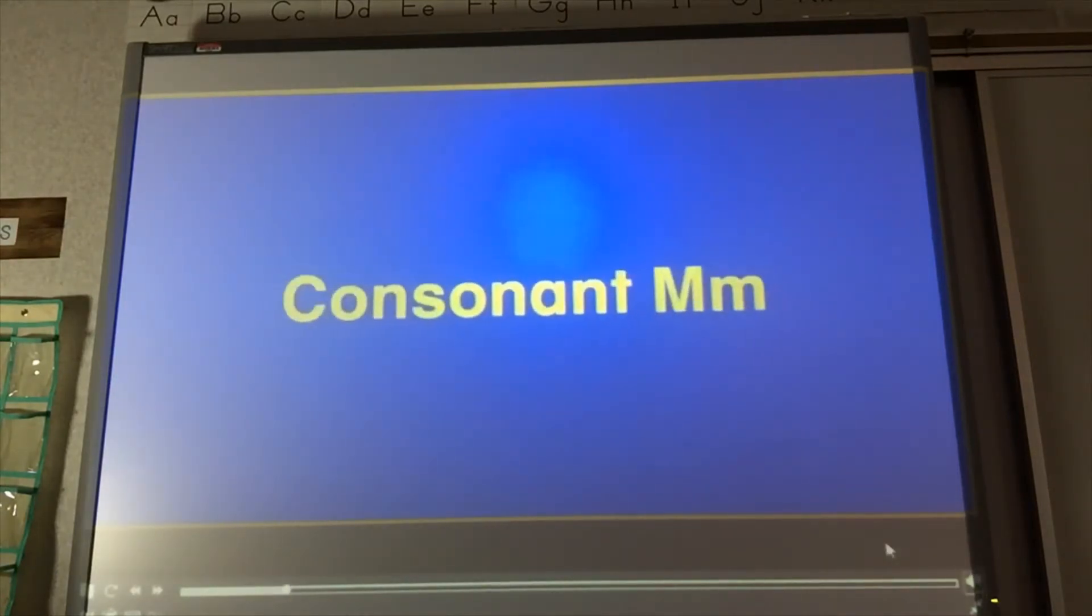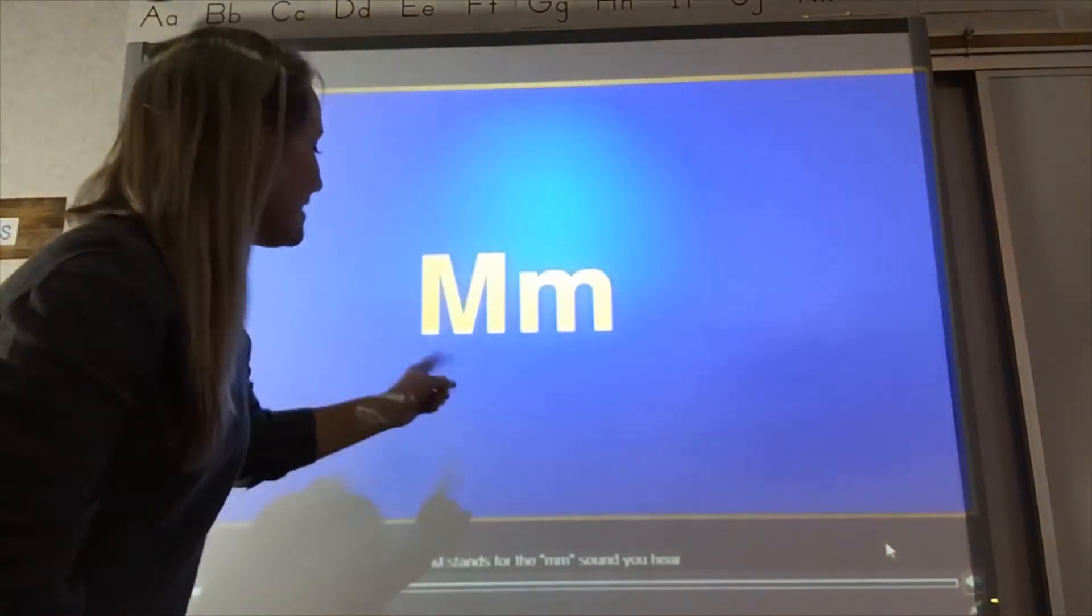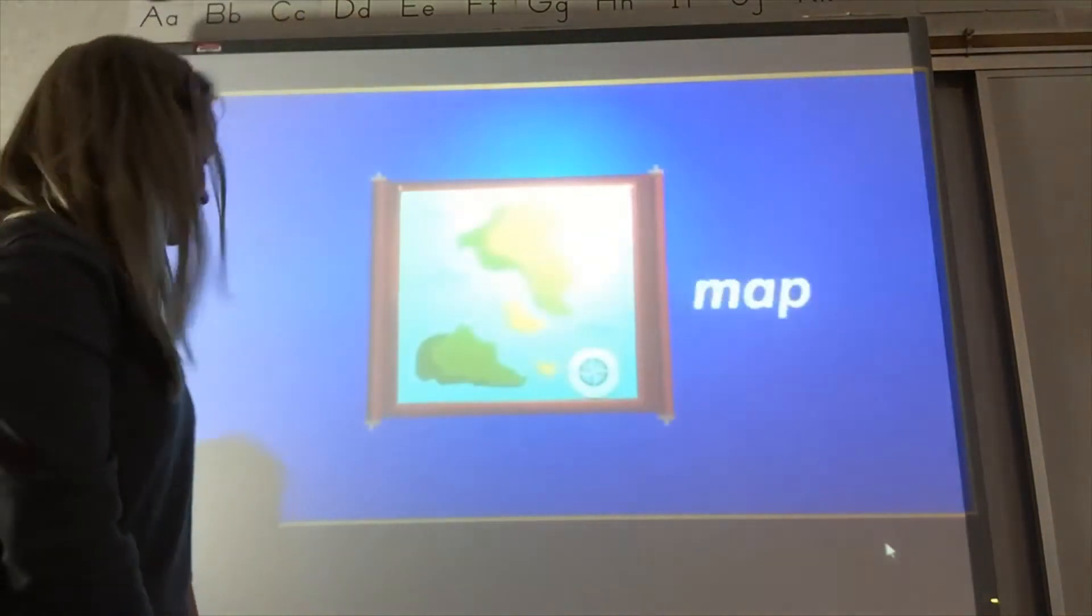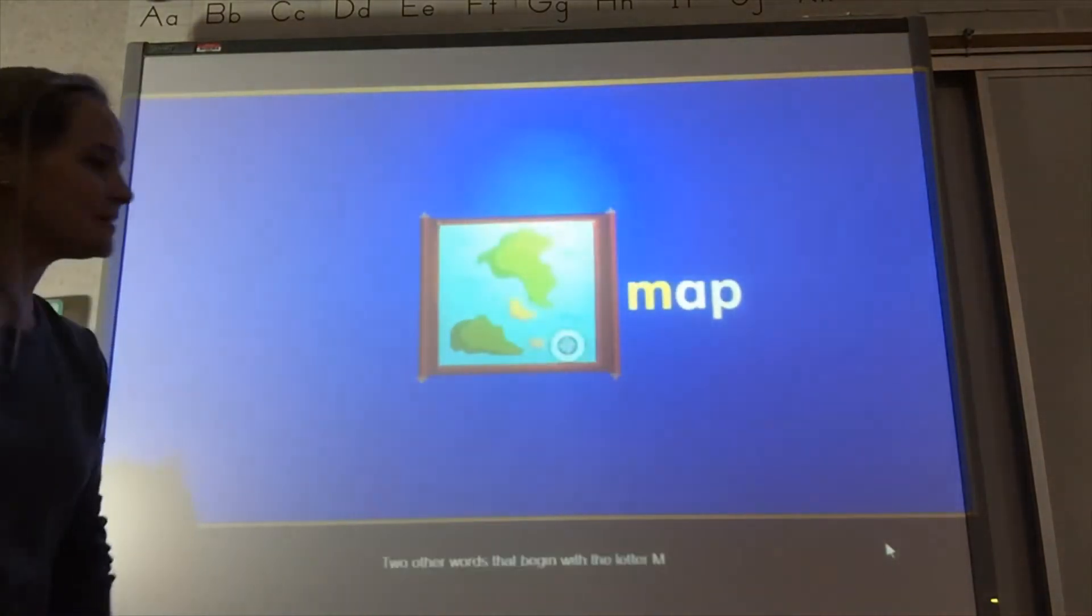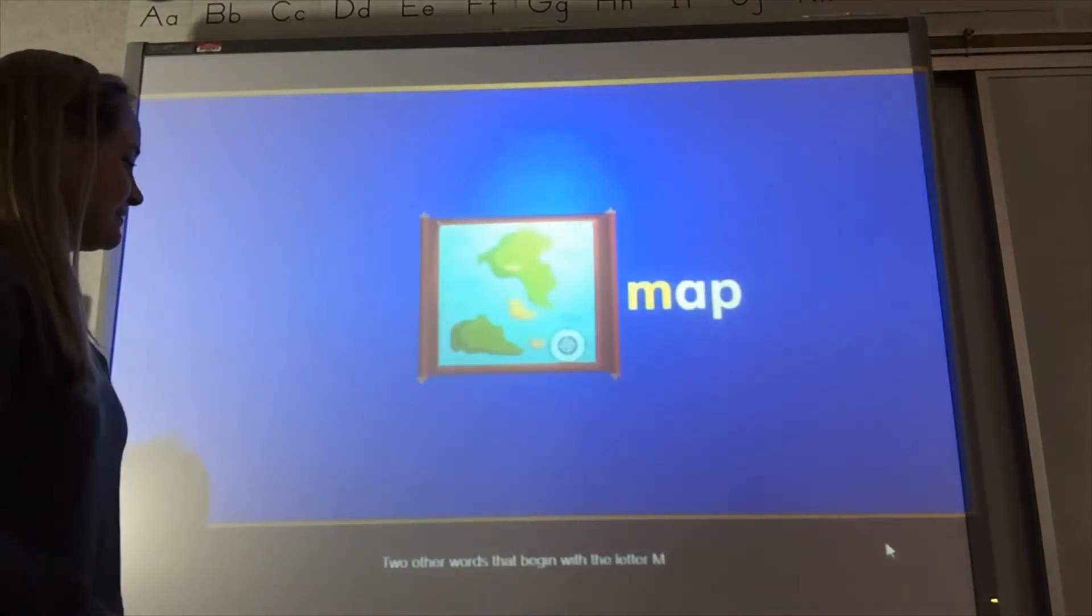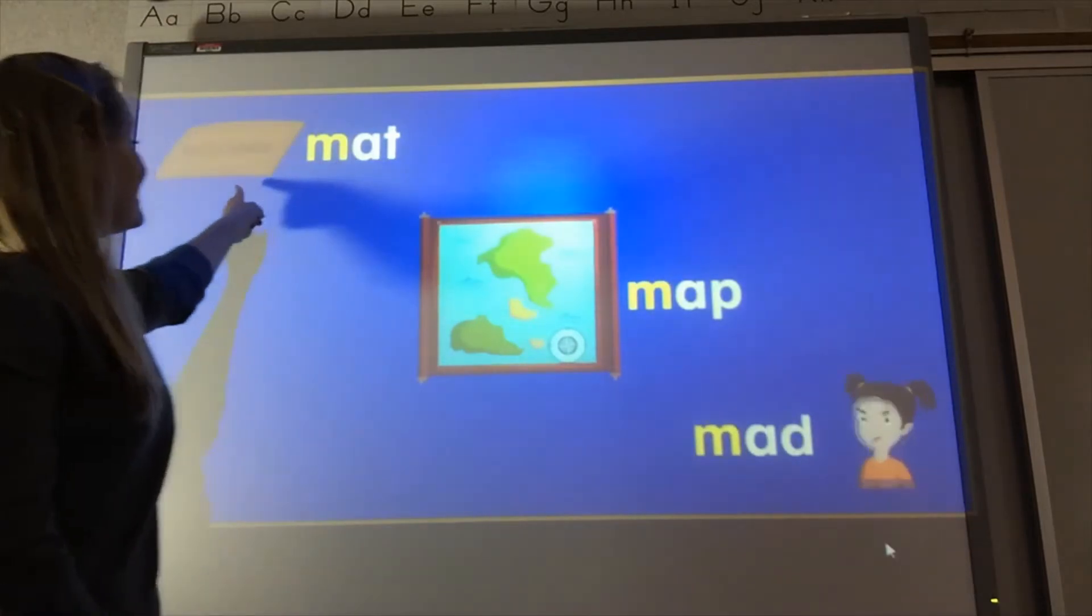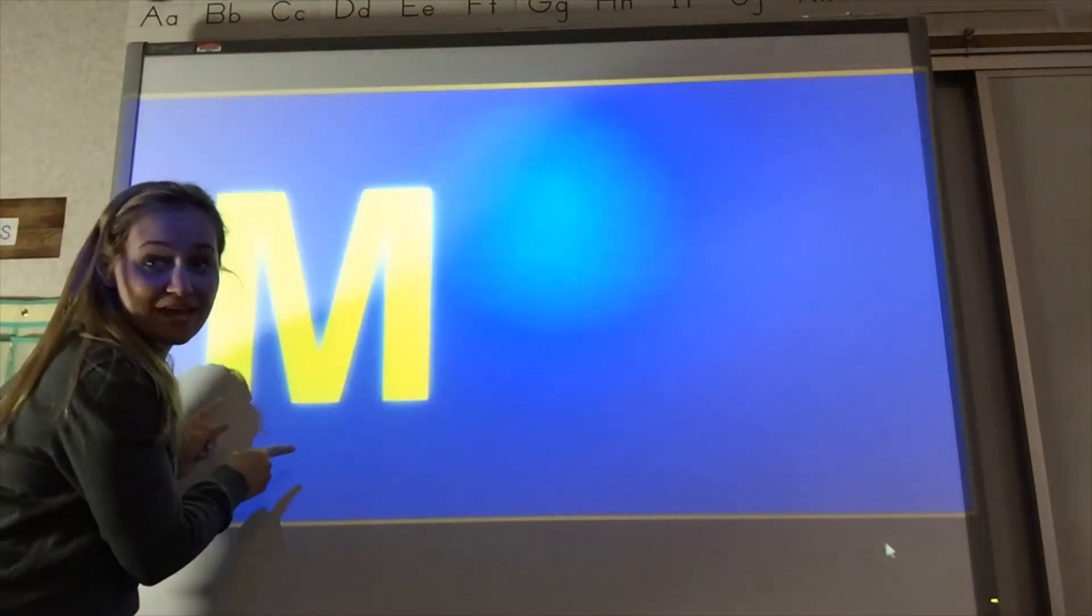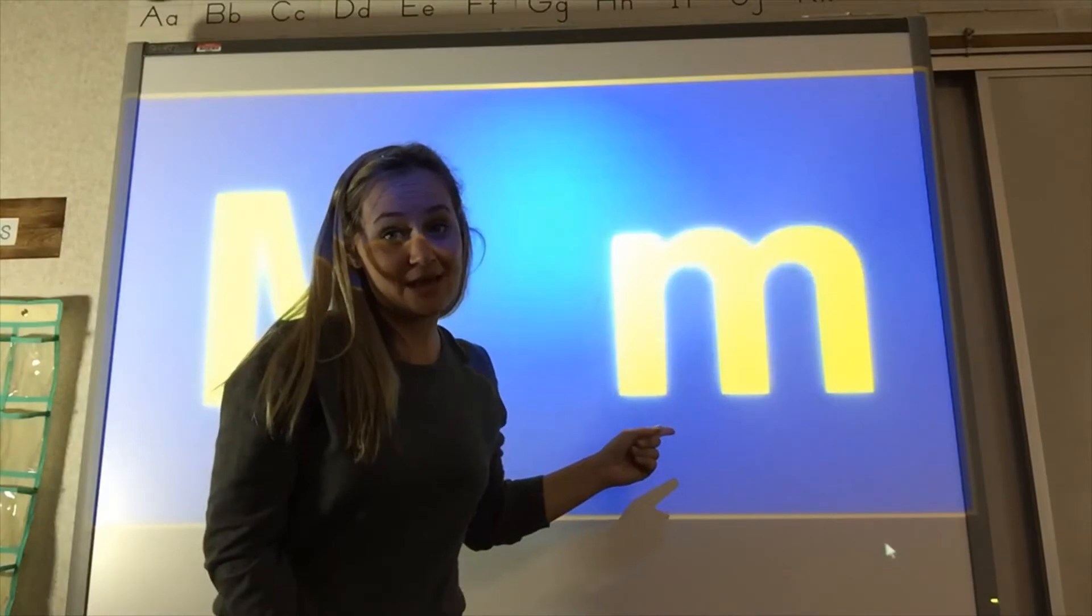The letter M is a consonant. M says M. Try it. M. You hear it at the beginning of map. And two other words with M are mat and mad. This is an uppercase M and this is a lowercase M.